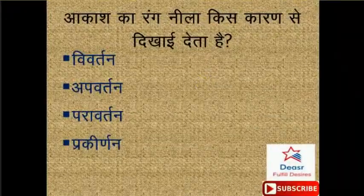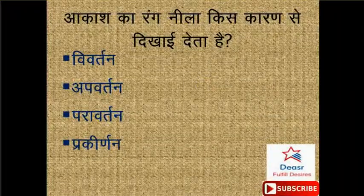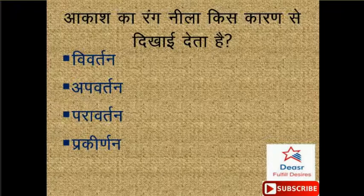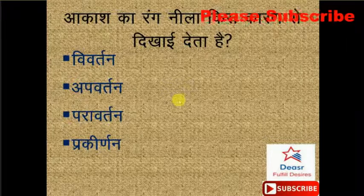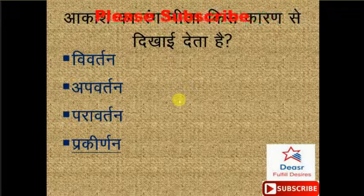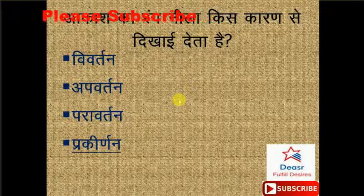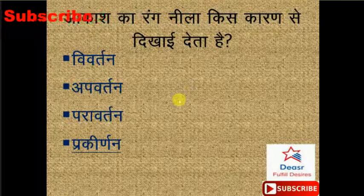Aakas ka nila rang kis kaaran se dikhaayi deta hai? Options hain: vivartan ke karan, apvartan ke karan, paravartan ke karan, parkirnan ke karan. Doston, iska sahih jawab hai parkirnan ke karan - option number D yahan pe correct hai.